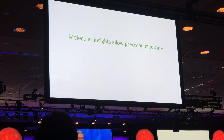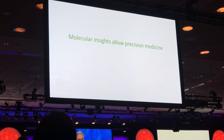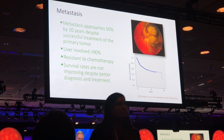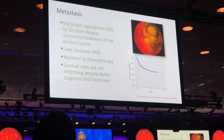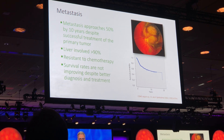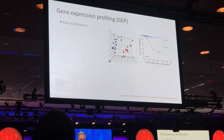Why do we care about molecular mid-sized uveal melanoma? This allows precision medicine in cancer in general and uveal melanoma in particular. As we've heard, the main problem with uveal melanoma is metastasis. Despite excellent local tumor control, about 50% of patients will develop metastatic disease if they live long enough, and this is highly resistant to standard chemotherapy.